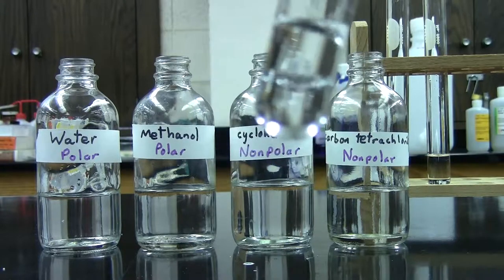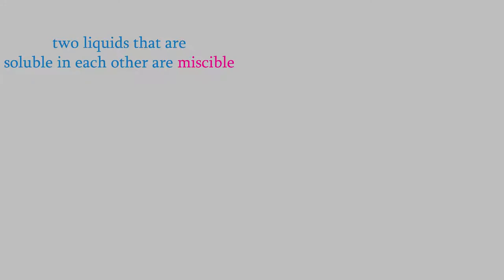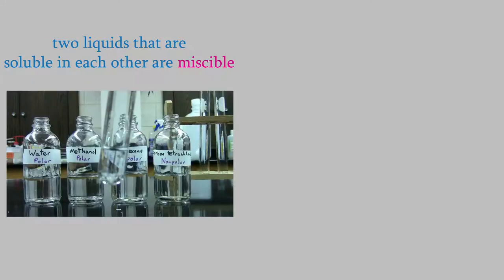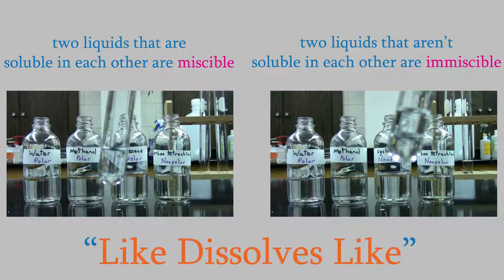When two liquids form a solution, we say that they are miscible in each other. So water and methanol are miscible, and so are cyclohexane and carbon tetrachloride. If we try to combine a polar and a nonpolar liquid, we find that they are immiscible. This property is summed up by a phrase you might have heard before: like dissolves like.